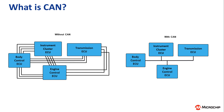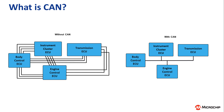The PIC18 Q84 microcontroller family is the first Microchip 8-bit device where the CAN peripheral supports CAN FD, which allows for larger data packets and faster data transmissions than CAN 2.0.